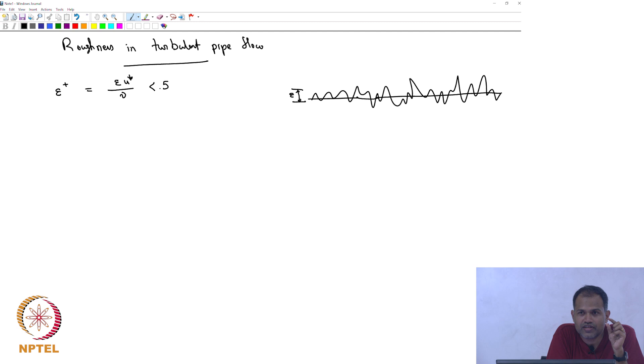Why we do that is because we said the thickness of the wall layer in terms of this plus quantity is approximately 5. We said y plus is approximately 5, and up to 5 you see the wall layer. So if epsilon plus is less than 5, that means the height of the roughness is smaller than the height of the wall layer. The wall layer will not see the roughness. Therefore, if epsilon plus is smaller than 5, then you can say that my pipe is actually smooth and I do not have to worry about the roughness. We call this hydraulically smooth pipes.